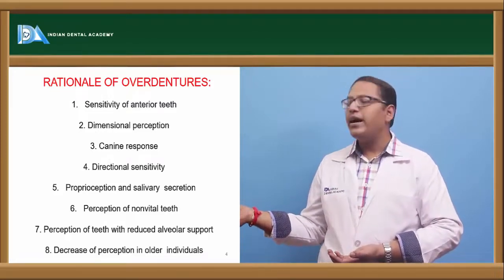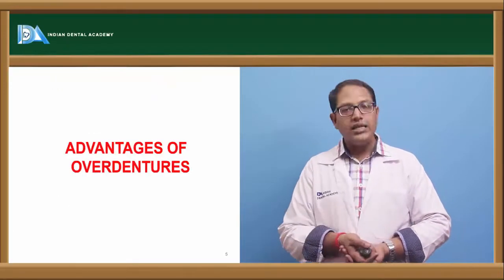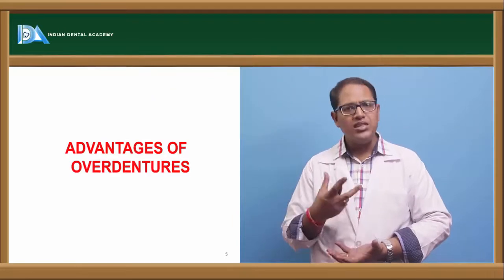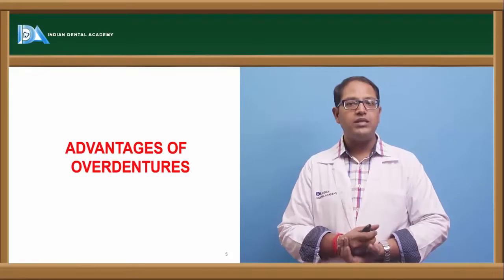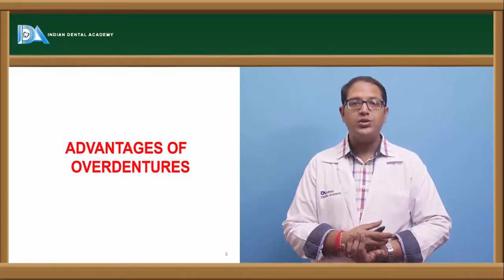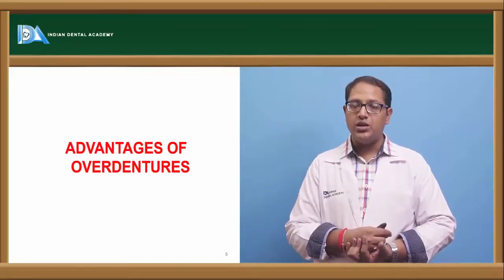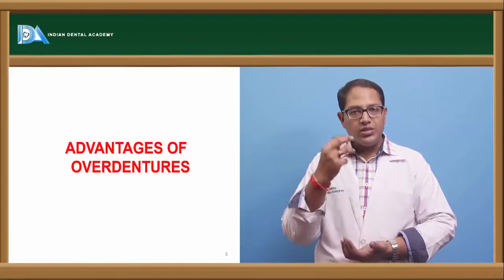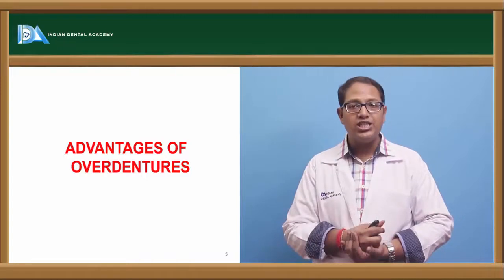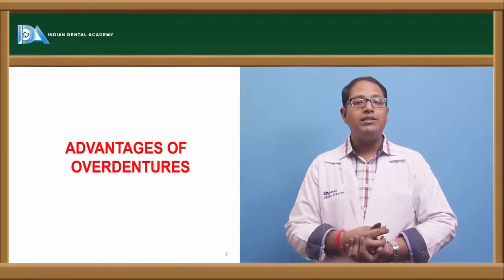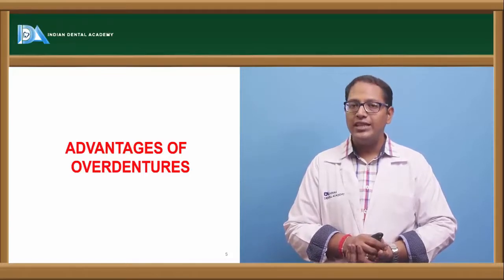Keeping all these rationales in mind, we go ahead with overdentures. The advantages of overdentures are that it is an equally effective and superior method of treatment. It also provides proprioceptive response. It is easy to maintain and clean, because with natural teeth below, you can remove the denture, clean it, and put it back with a single path of insertion. Stability and retention are much higher than a normal complete denture not supported by any natural teeth or implants.